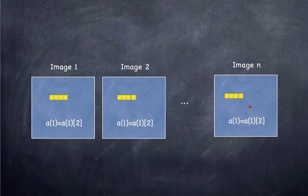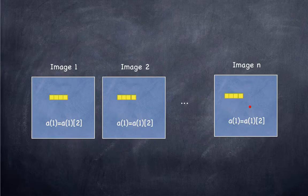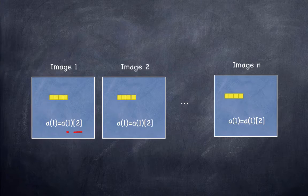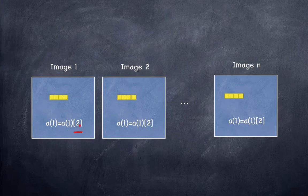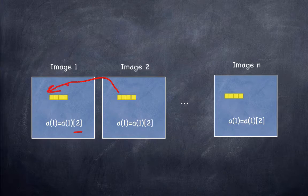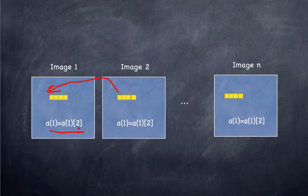Here's one example of how the coarray mechanism is used to do communication. Let's say each image is executing this line. What's happening then is that we're copying data from image 2, copying element 1 from image 2 to element 1 of image 1 when this line executes.